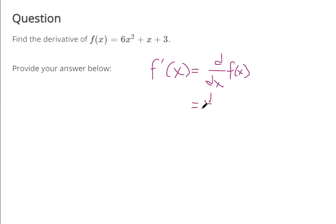So in other words, you can do the derivative with respect to x of what f of x is. It's 6x squared plus x plus 3. And the derivative operator gets to distribute to each separate term.